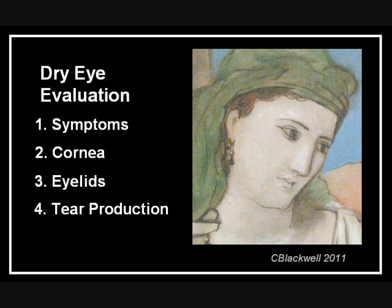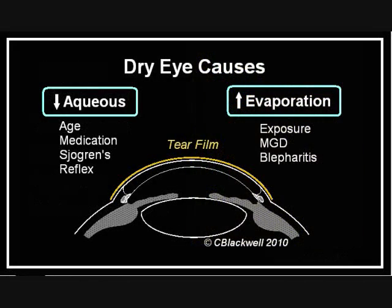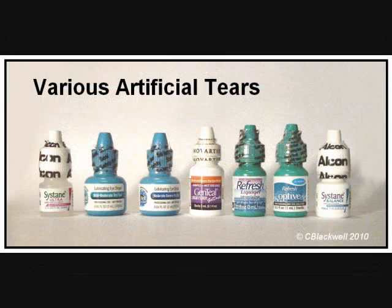Rating the overall severity helps decide how aggressive we need to be with treatment. If aqueous production is down, we have the following range of options. For mild symptoms with minimal to no corneal damage, simple lubricating drops are the easiest first line of treatment — brands like Systane, Refresh, Blink, etc. Basically, they are saline plus a thickening agent that attempts to mimic the lubricating action of your own tears. Using just saline alone is not helpful because you wash out the lubricating substances that you need.